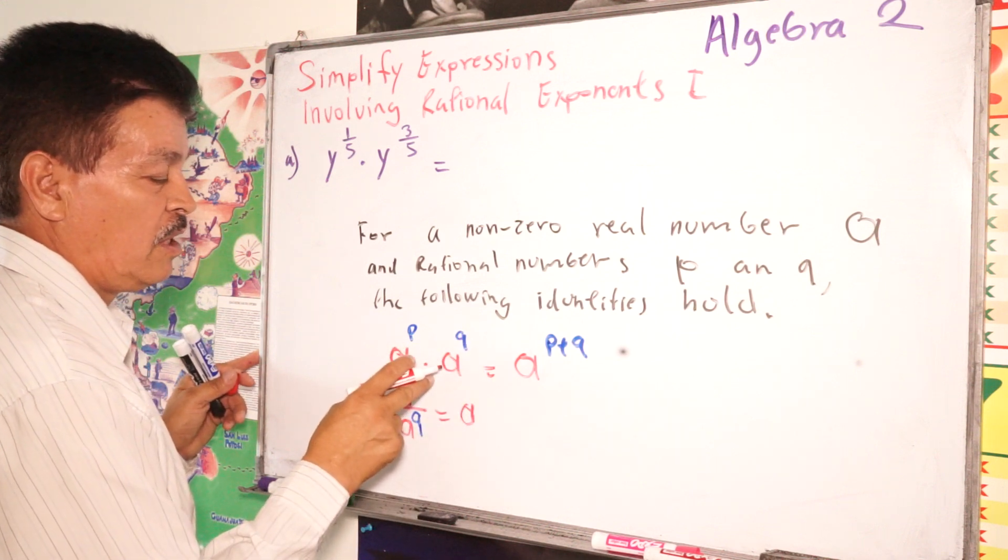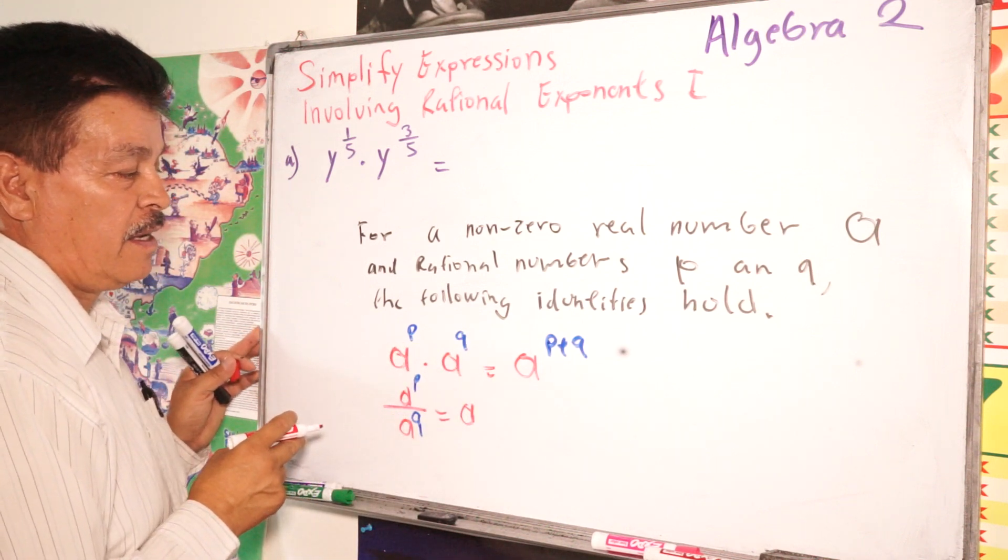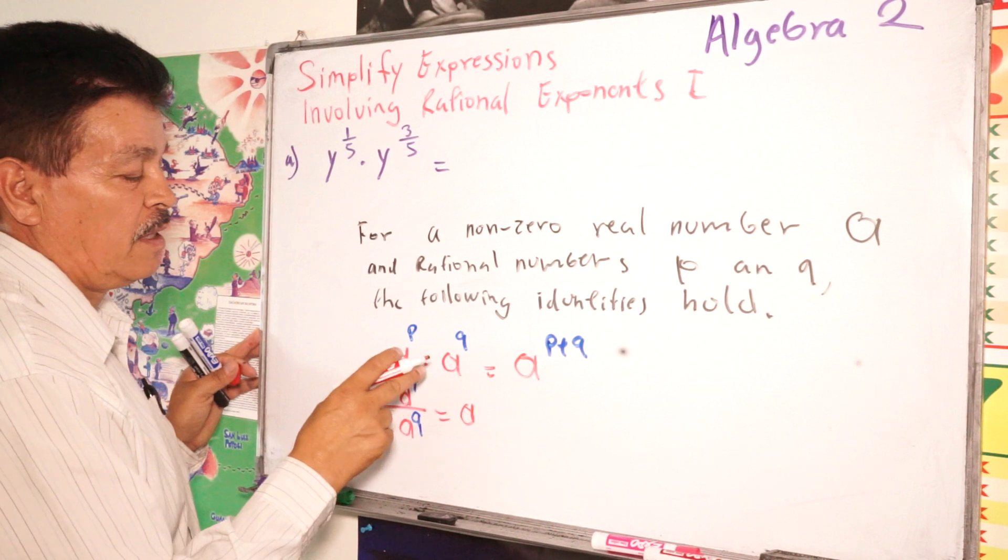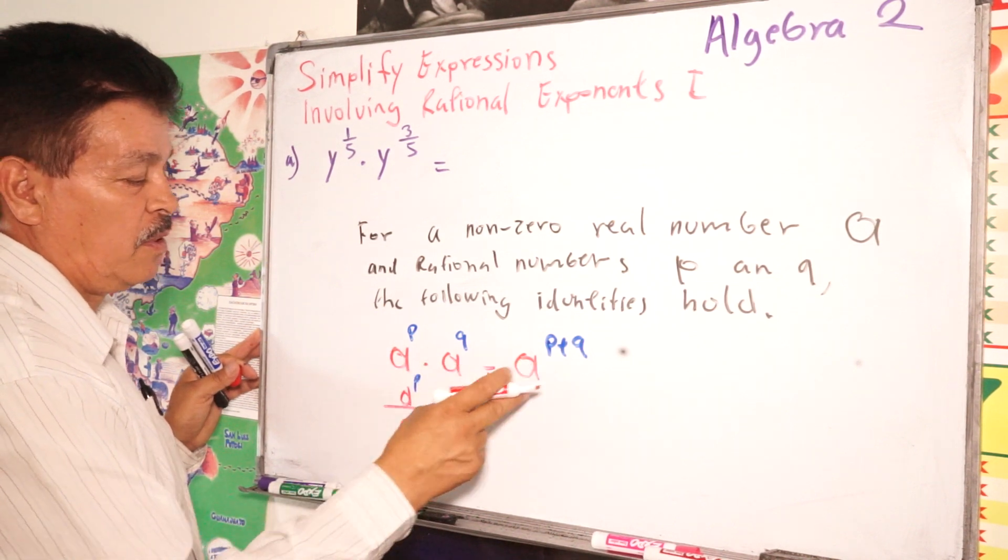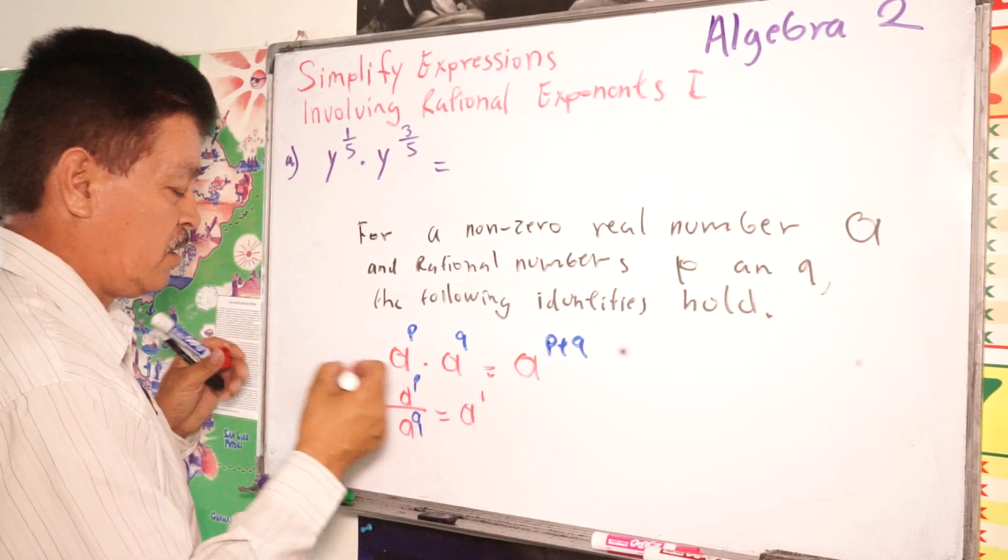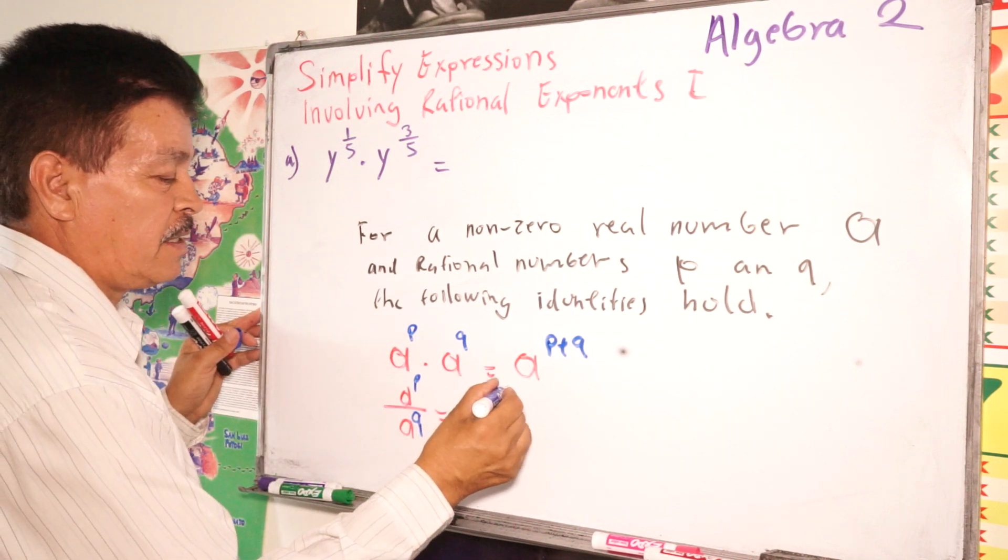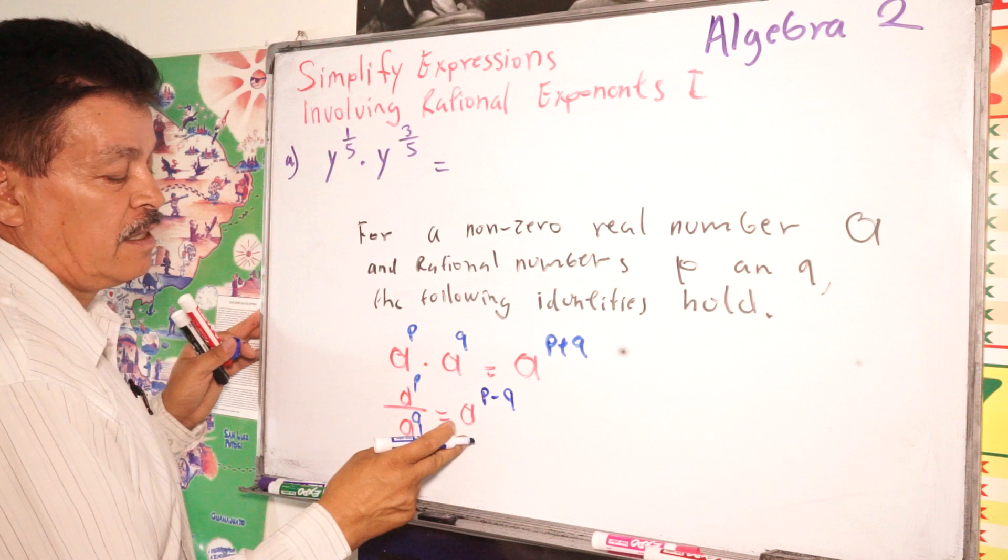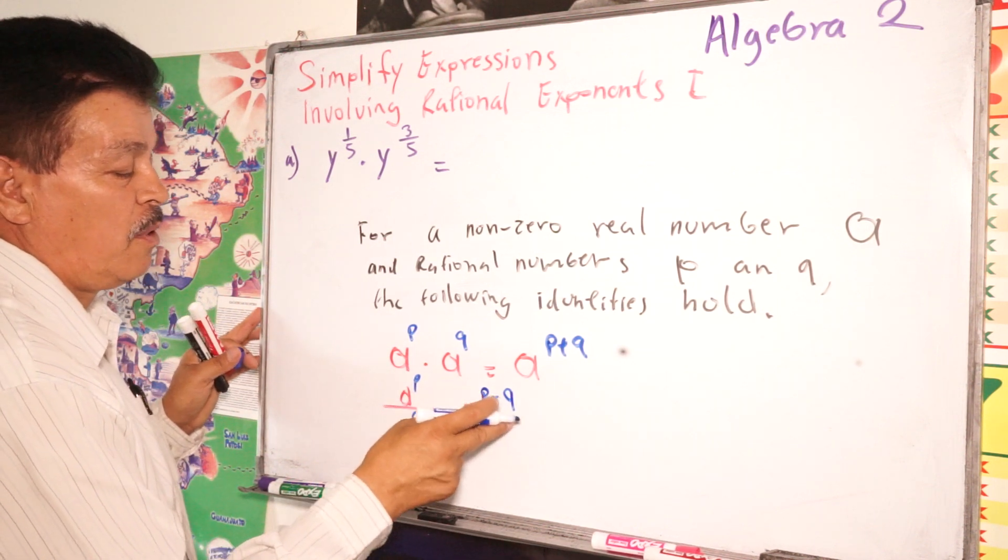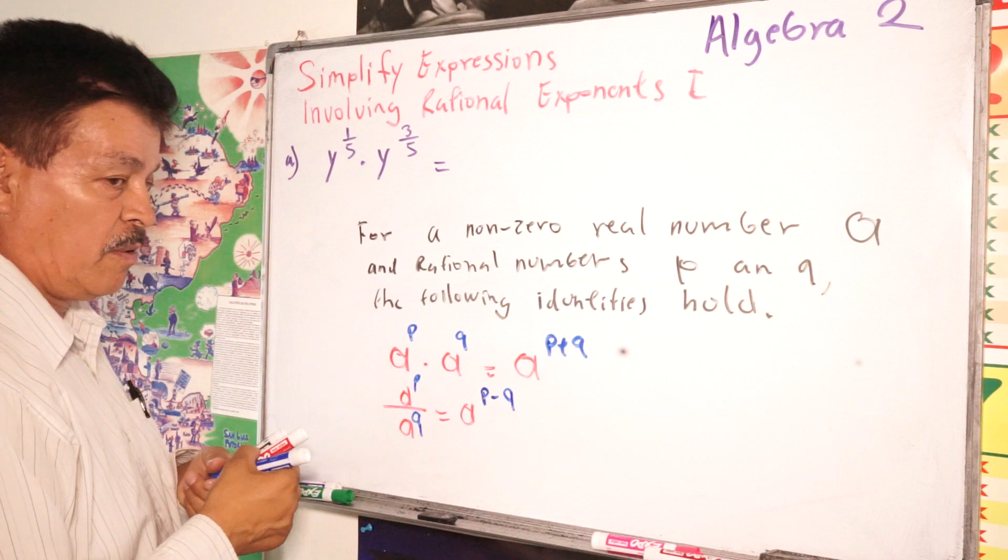And the first time when you multiply with the same base, the exponents, in this case, the exponents subtract here. Exponents P minus Q. A equals A to the P power minus Q power.